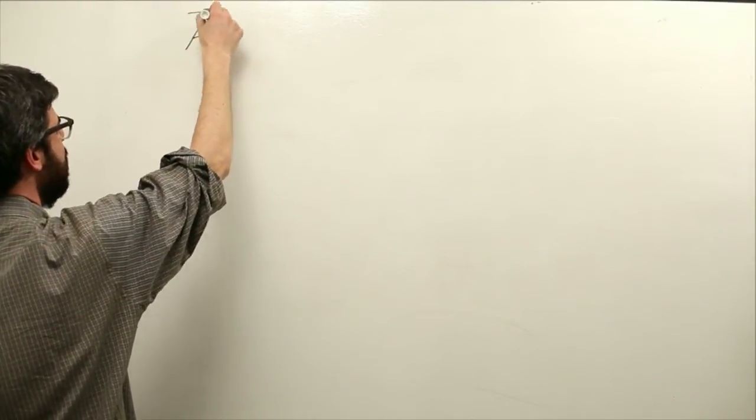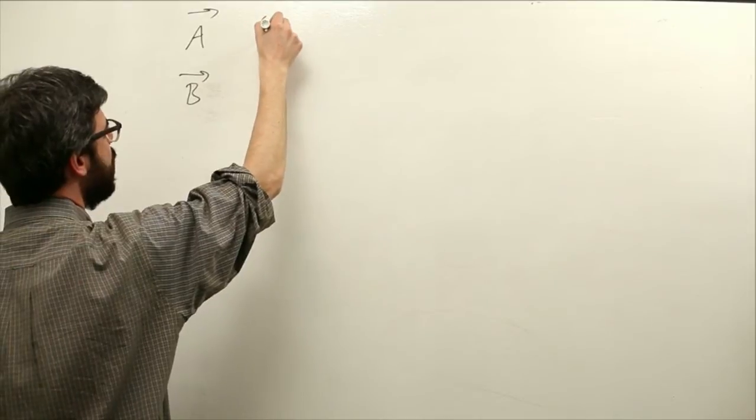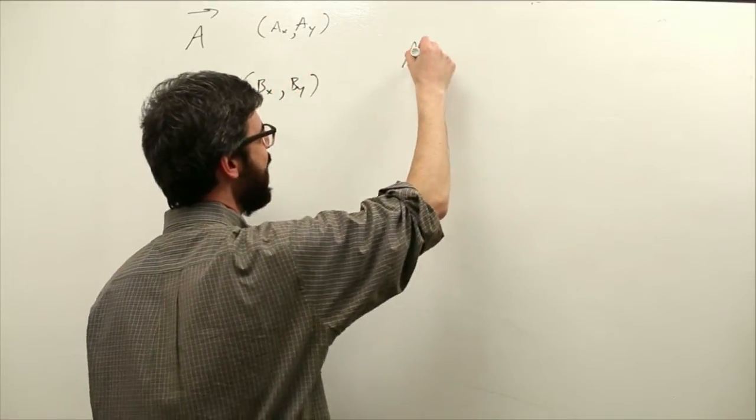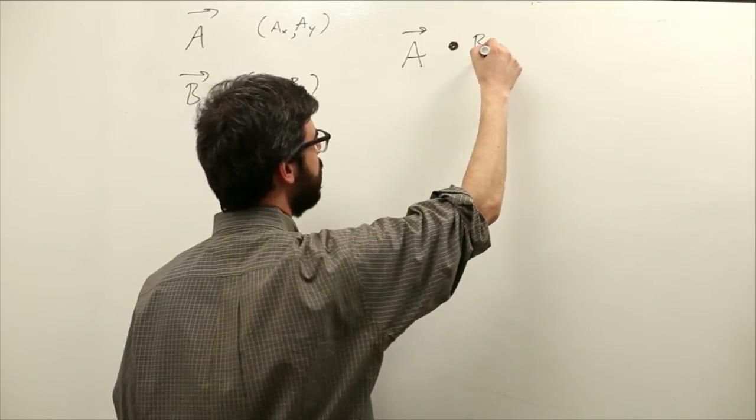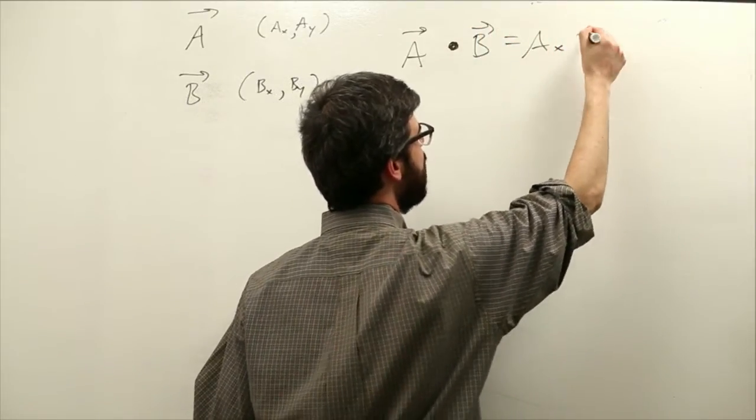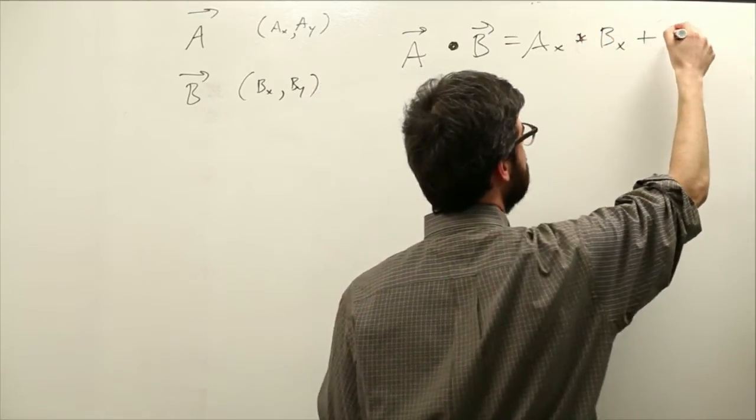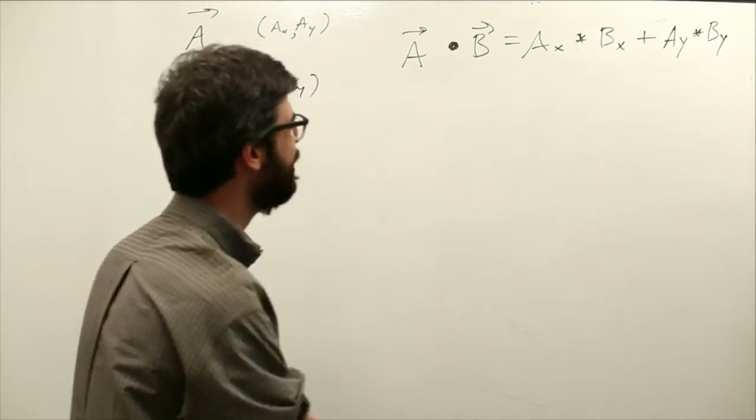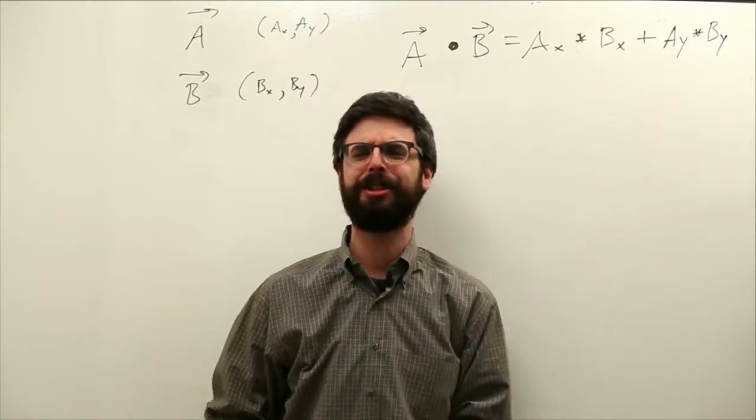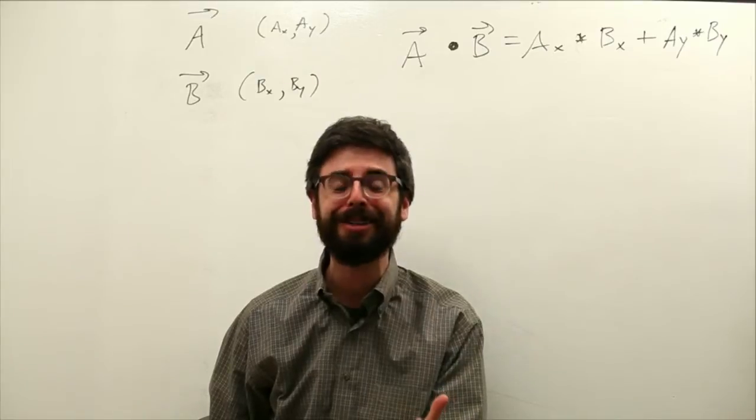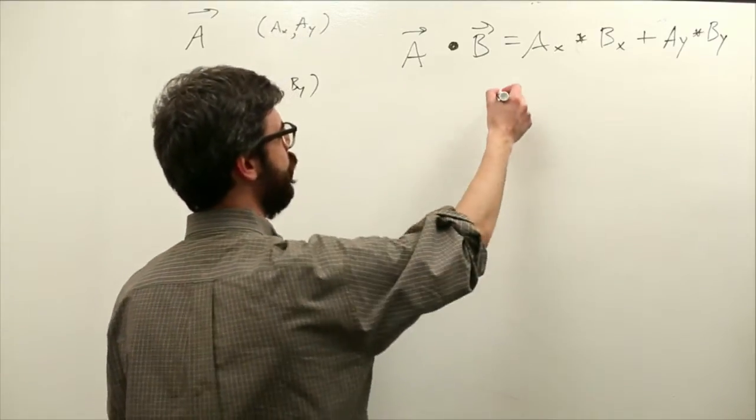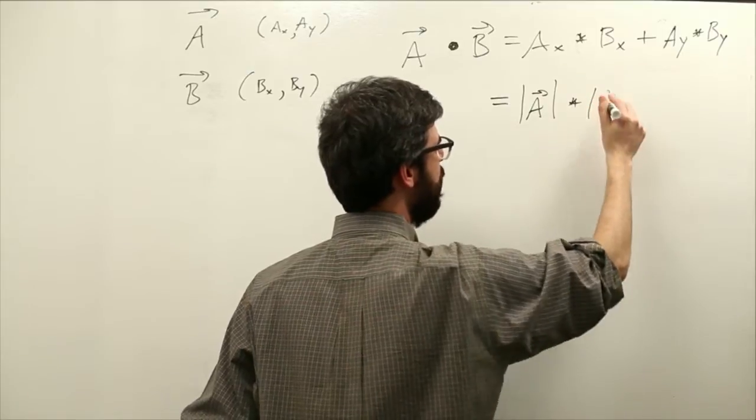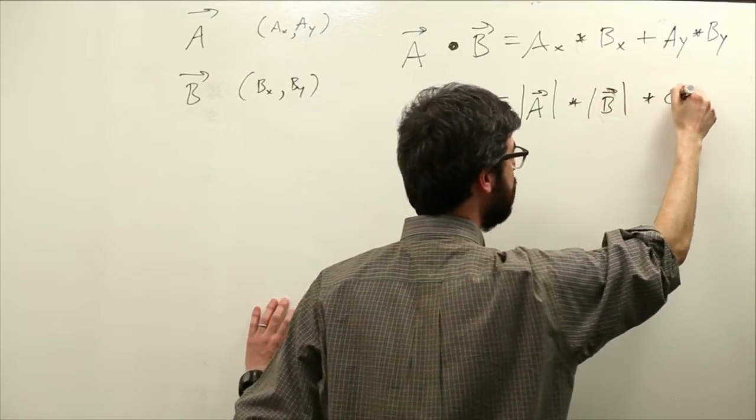Let's say we have a vector a, and we have a vector b. We know a is really a sub x comma a sub y, and b is b sub x b sub y. We can say that a dot, the dot product, b equals a sub x times b sub x plus a sub y times b sub y. I hope I got that right. This is the formula for the dot product. Now, you might be asking yourself, weren't we talking about the angle between two vectors? Well, in fact, we were. There's another way we can write the formula for the dot product. It is the magnitude of vector a times the magnitude of vector b times cosine of the angle, the angle between those two vectors.